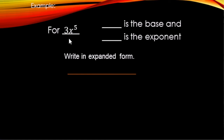Now consider 3x to the fifth power. The base is what's directly to the left of the exponent, so the base is just x, and the exponent is 5. In expanded form, we keep the 3 and then write five x's being multiplied: 3 times x times x times x times x times x.